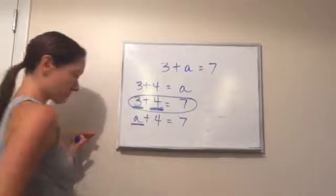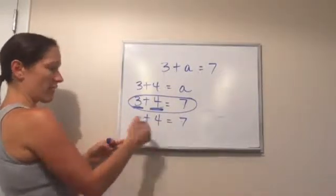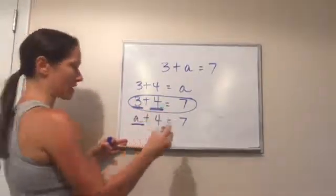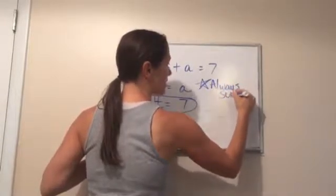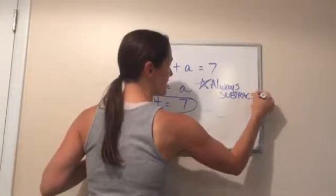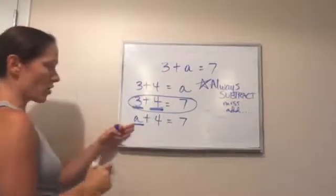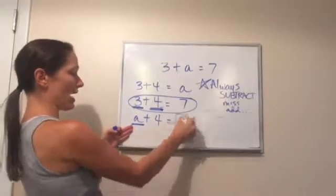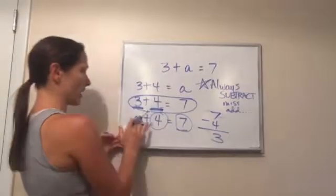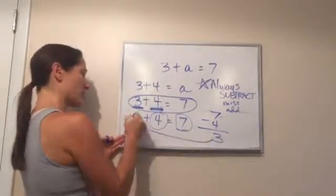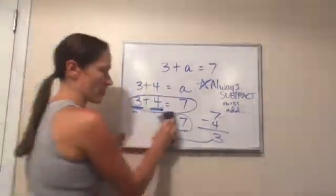Let's look at the bottom one. A plus 4 equals 7. Again, if you have a missing addend, you're always going to subtract — you might want to write that down: always subtract when there's a missing addend. So we have 7 and 4; we subtract 7 minus 4 and get 3. Let's put 3 back into the problem: 3 plus 4 equals 7? Yes. We know we've done it right.